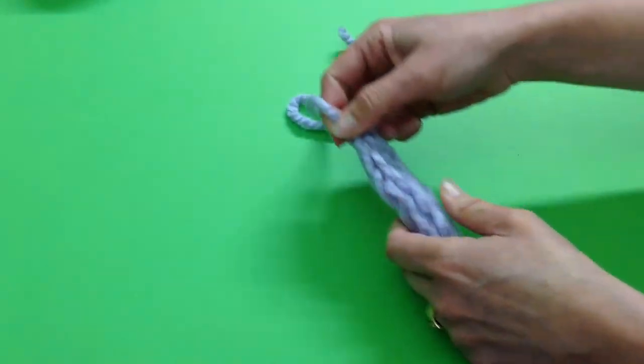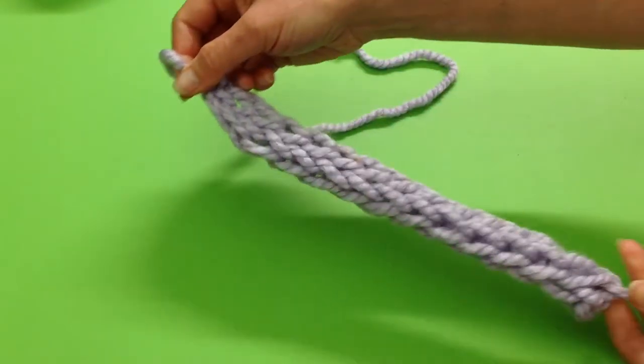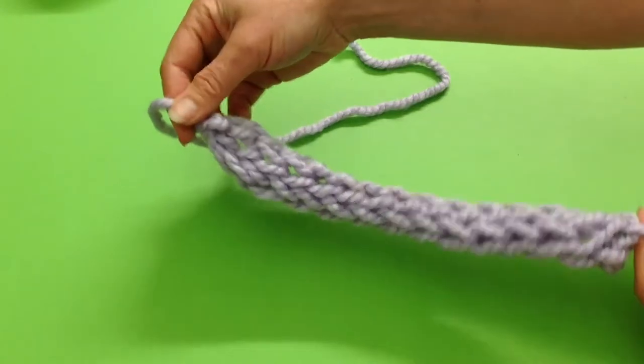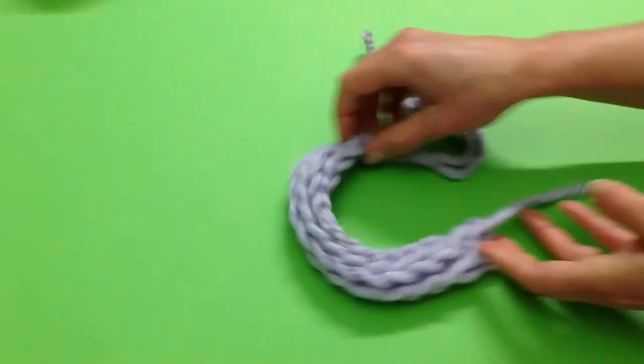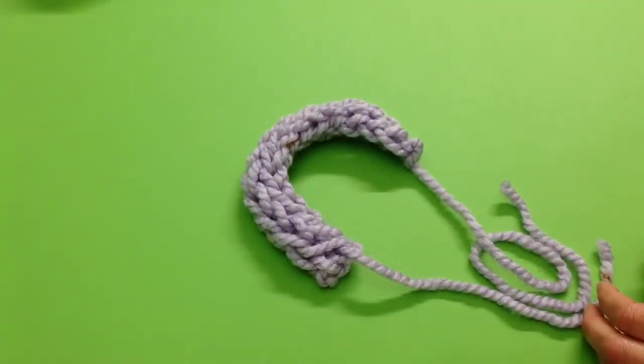Until we've got the one loop, and we're going to take our wool, thread it through, and finish it off, pulling it nice and tight like that. And there we have our finger knitting! Of course, it would normally be much, much longer than this, but that's just to show you how to get started and how to finish.